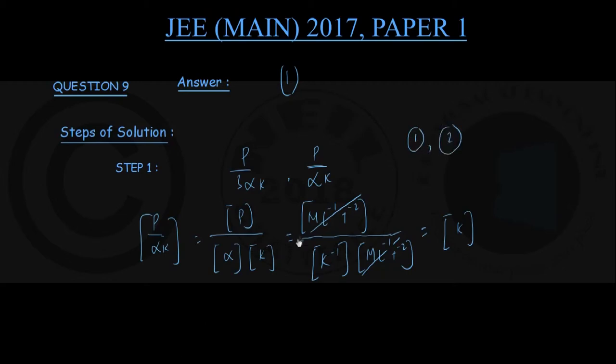Options 3 and 4 are dimensionally incorrect; we can just eliminate them. Now between 1 and 2, which one should we choose?